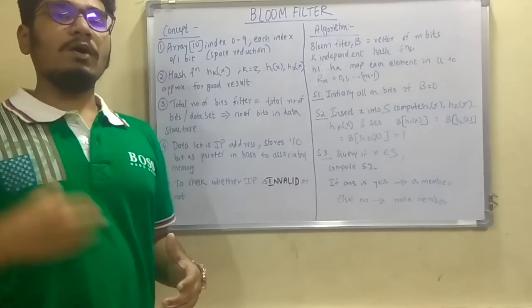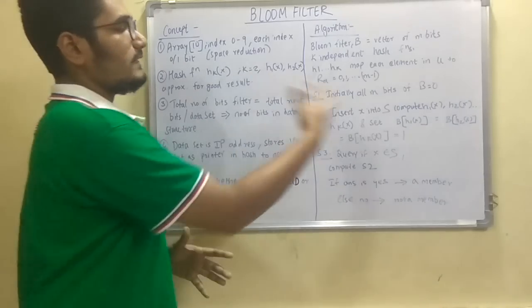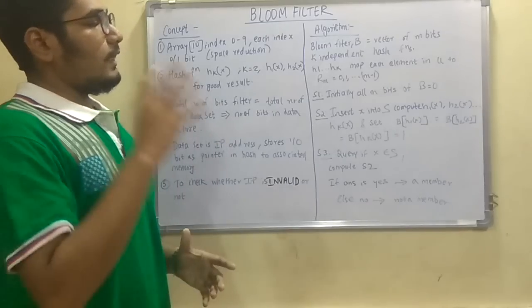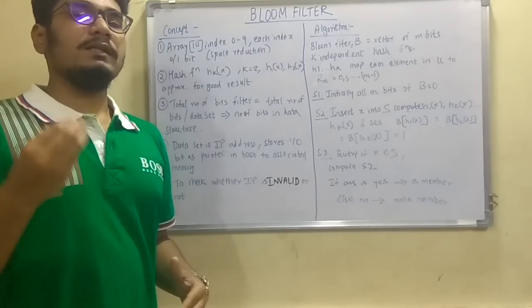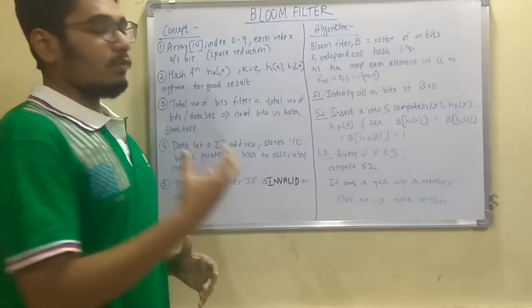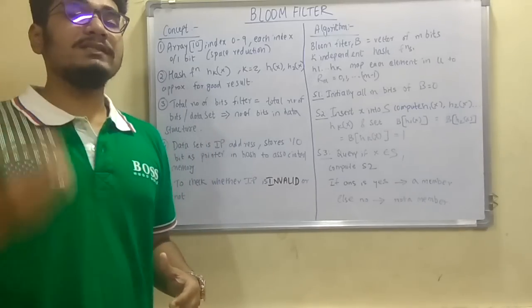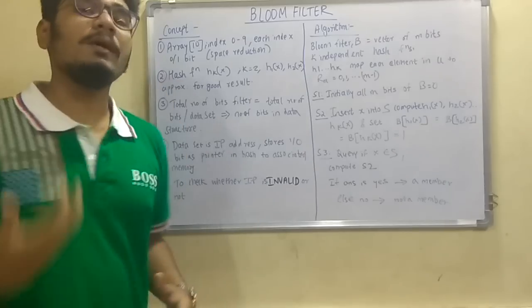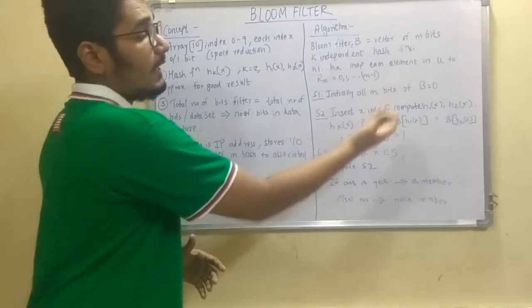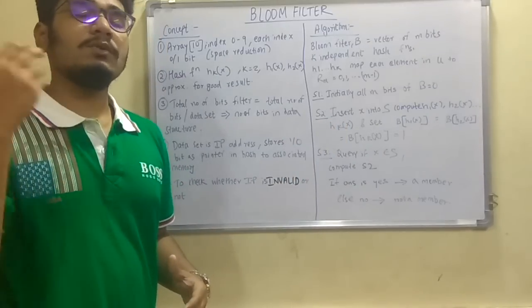Next, so we'll start the algorithm. Initially all the bits in the bloom filter, that is b, we set it as 0. Next we insert the element x from the sample set s. Now where will we insert this x? So obviously this has to be inside the hash function. So we have to compute the hash function, that is h1(x), h2(x) up till hk(x), but for simplicity purpose we will consider only two hash functions.